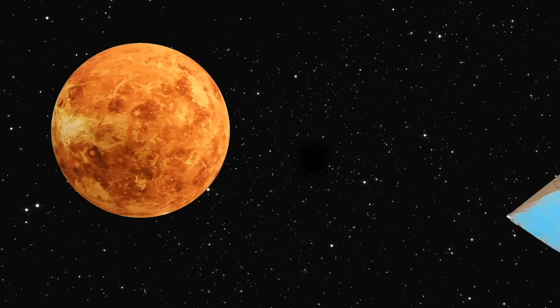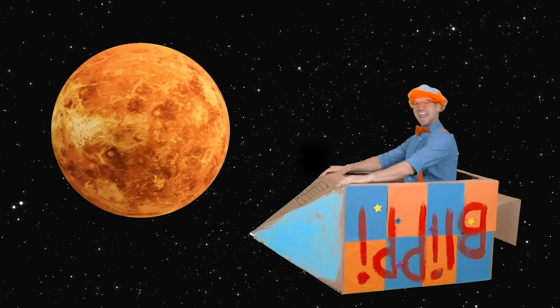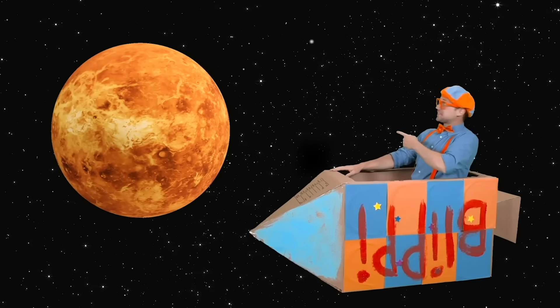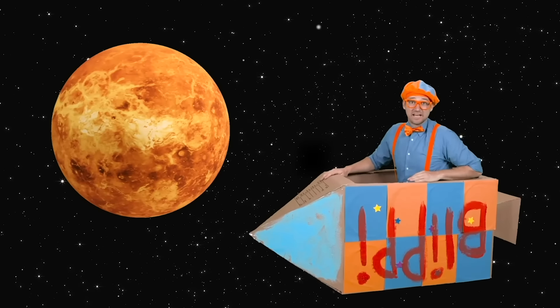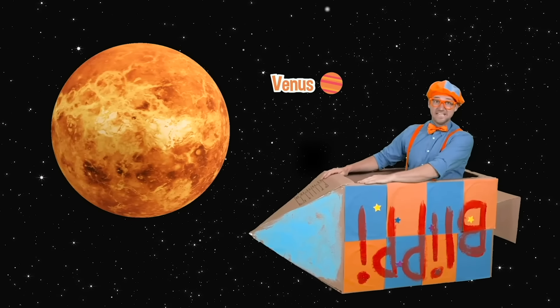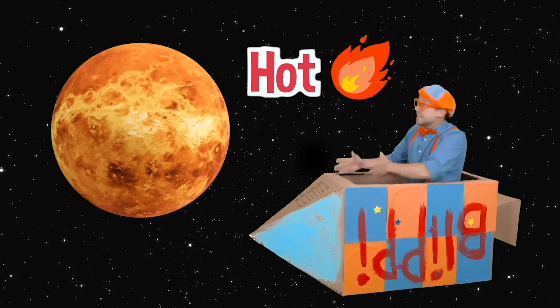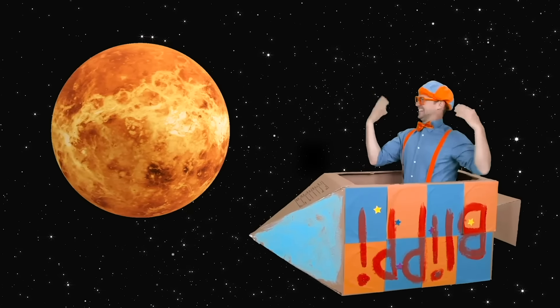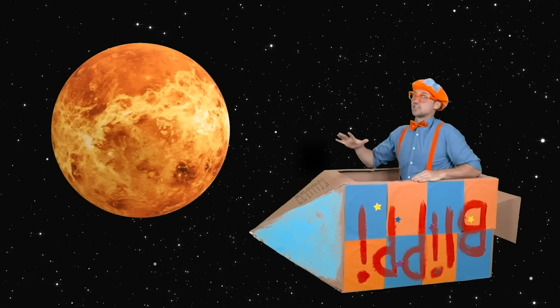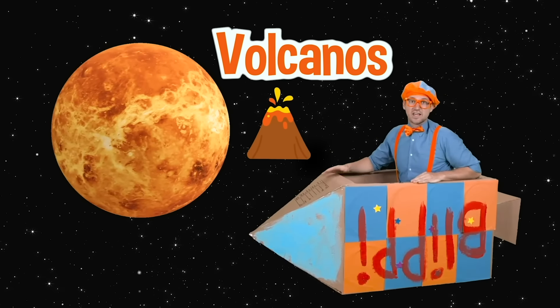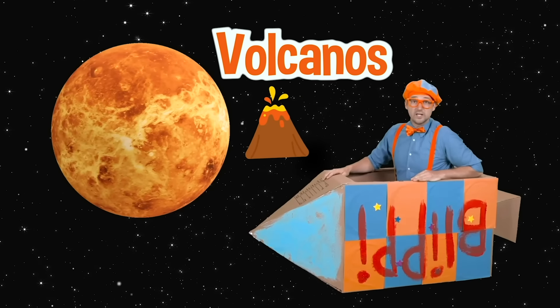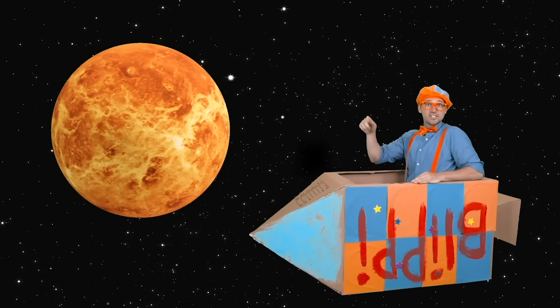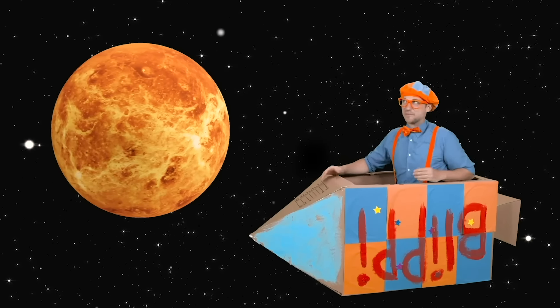Now we're at another planet. Look at that planet. That planet is the planet Venus. And it is so hot! It's the hottest planet. It's getting hot in here! The planet has so many volcanoes on it. And it's actually really bright. If you look up in the sky from our planet Earth, you can actually see it without a telescope. Wow!